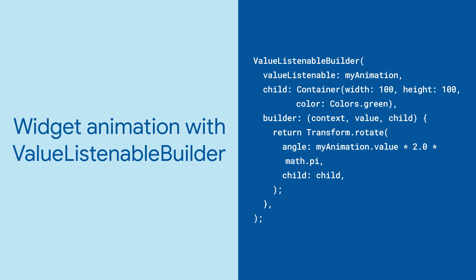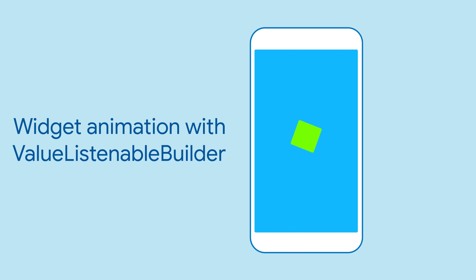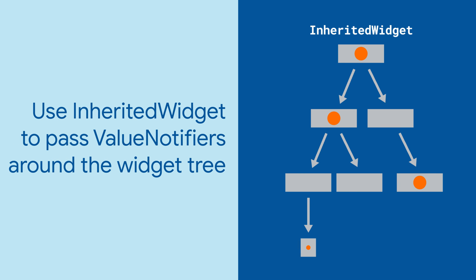Flutter makes good use of the ValueListenable interface, most notably for animations. So you can pop those into ValueListenableBuilders as well and use them to animate widgets. One final tip: use an InheritedWidget to make your values accessible by widgets throughout your widget tree.